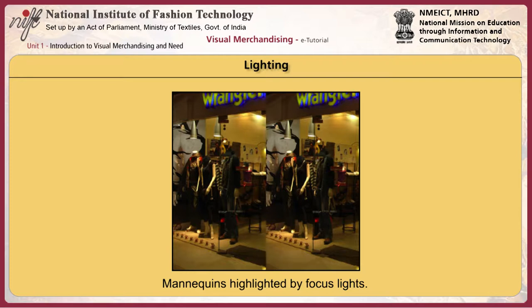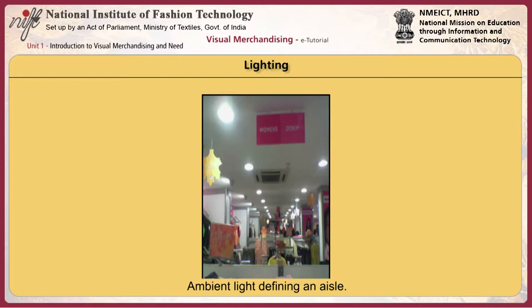Mannequins can be highlighted by focus lights placed at the bottom or top. Ambient lighting is typically used to define aisles — when you walk into a store, the lights on the pathway are called ambient lights. Together, ambient lighting and accent lighting form the highlight of a store.